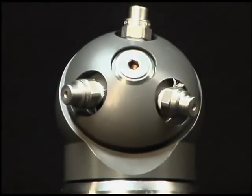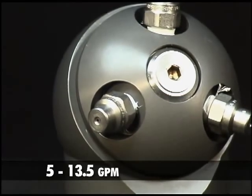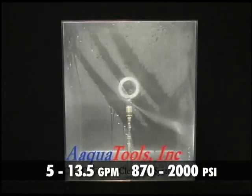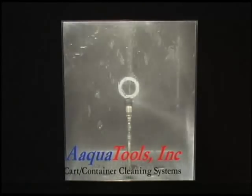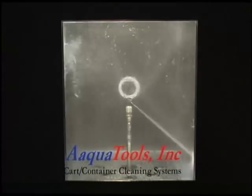The three spray nozzles take a flow of 5 to 13.5 gallons per minute and turn it into a jet stream of 870 to 2,000 PSI. The revolutions are fast and accurate, knocking debris loose and out of the container.